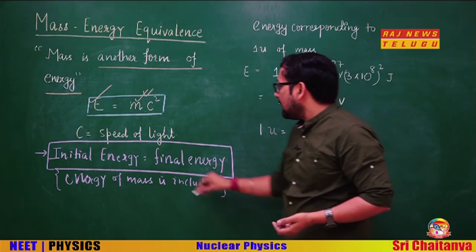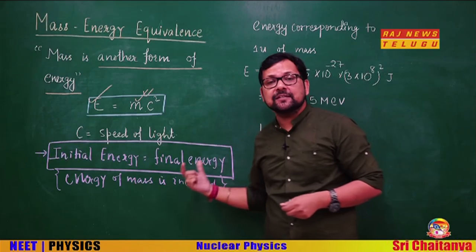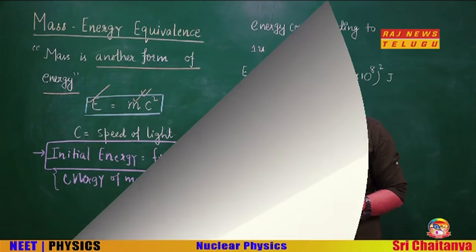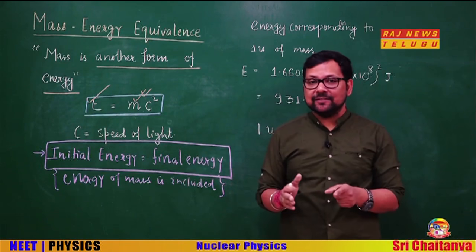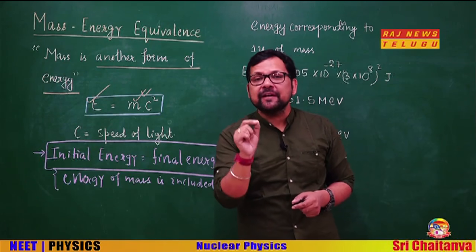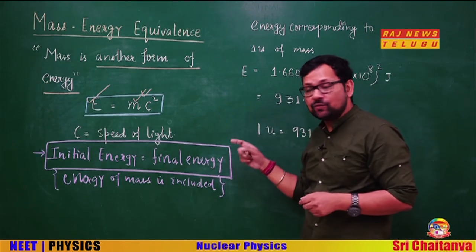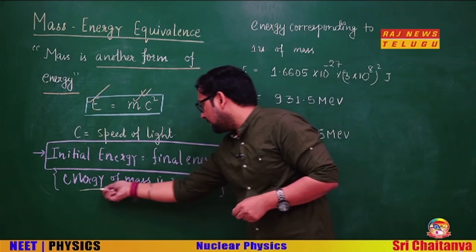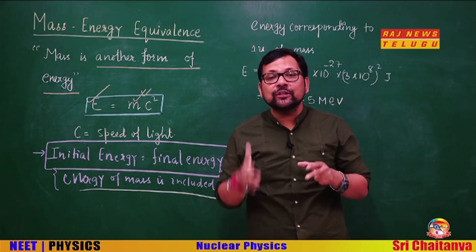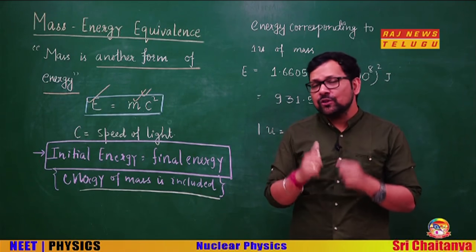Initial energy equals final energy — this is conservation of energy, which we learned in lower classes. But Einstein made a small correction: according to him, yes, initial energy equals final energy, but the energy of masses must also be included, because mass itself is a form of energy.